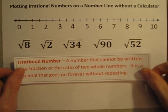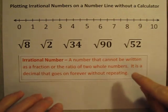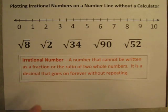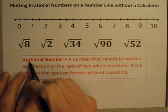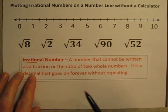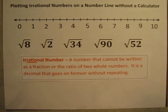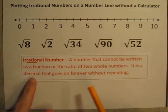The first thing I should do is clarify what is an irrational number. An irrational number is a number that cannot be written as a fraction or as the ratio of two whole numbers. You can see the word 'ratio' right in the word 'irrational,' so it cannot be written as a ratio, which is why it is irrational. Irrational numbers end up being decimals that go on forever without repeating.